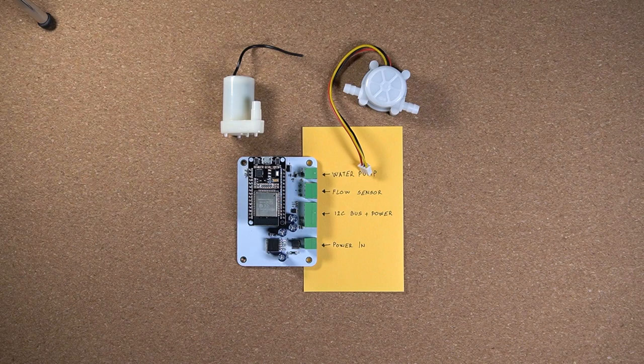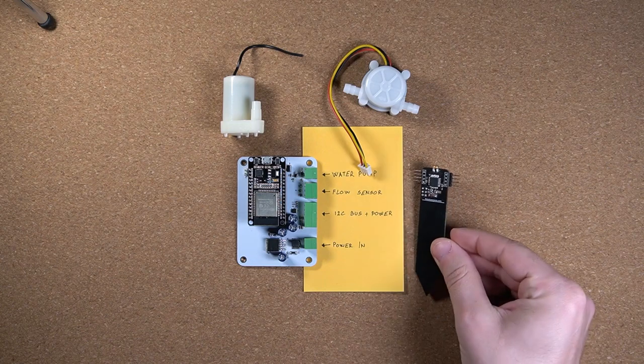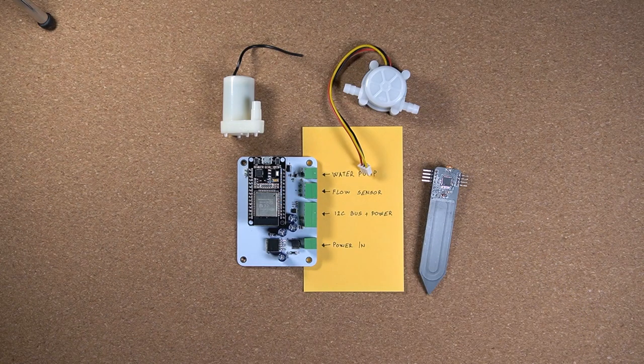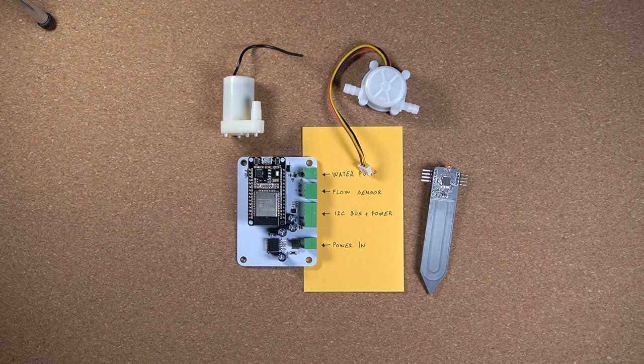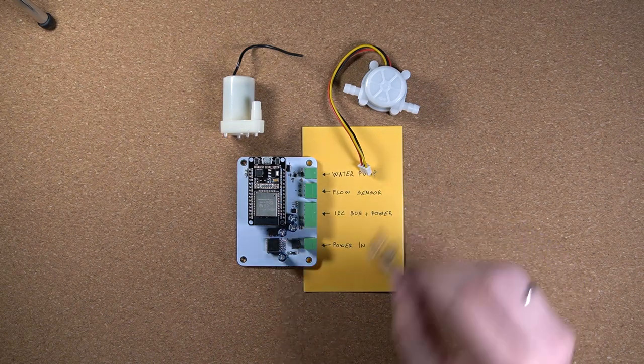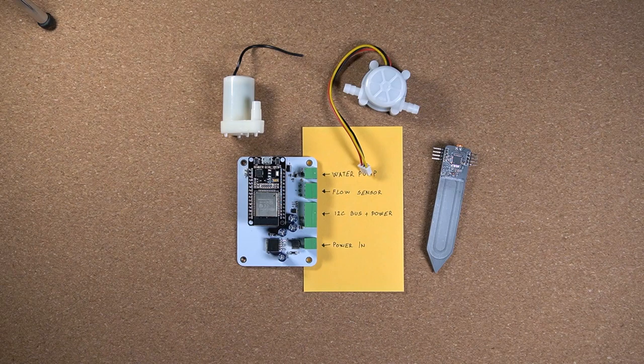But unless we want to water all the plants at the same time, we need a way to select which plant needs water. If you recall in part 1 of this series we defined our own I2C communication protocol, and some of you even commented that it might be overkill for what we are trying to achieve. This protocol allows us to have many different devices on the same bus, but not only that, it allows us to easily distinguish which device is which and also what capabilities it has.